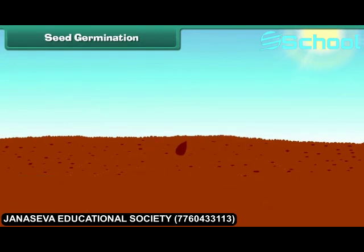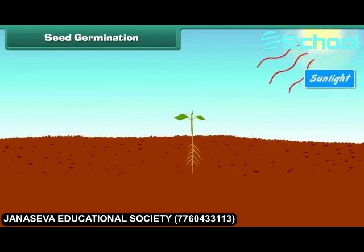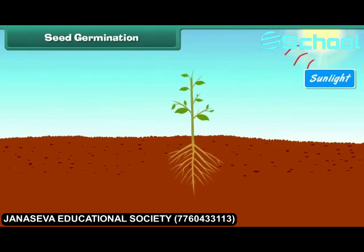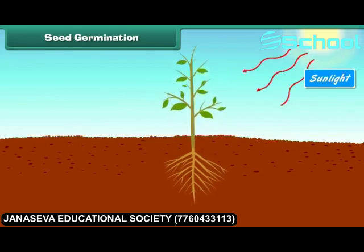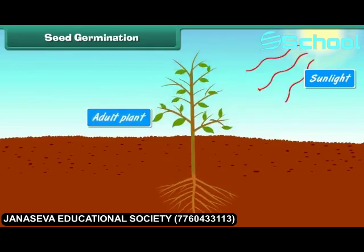The roots of the germinating plant appear first and grow towards the earth. After that, the shoot germinates upwards towards sunlight, and then leaves start growing up on the shoot. The young plant is called a seedling, which grows into an adult plant.